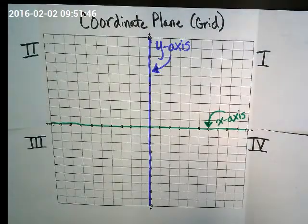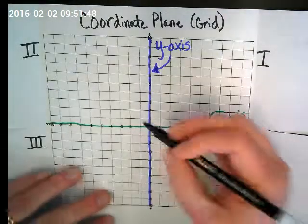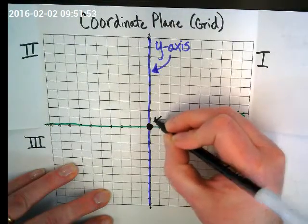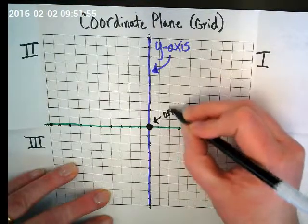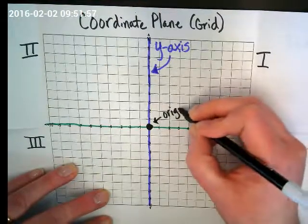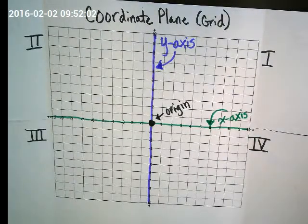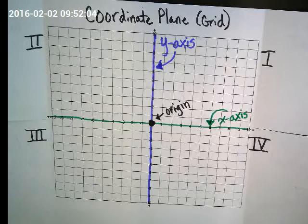Another vocabulary term that we're going to be using often is right here. Please label this center where the two lines cross as the origin. It's always where we start every time we graph.